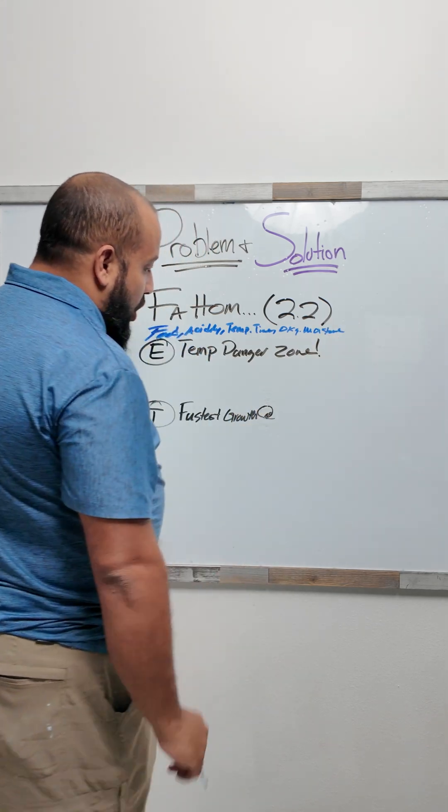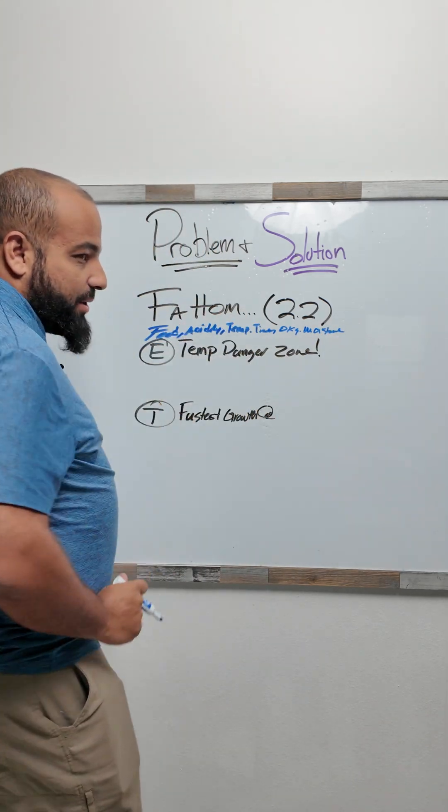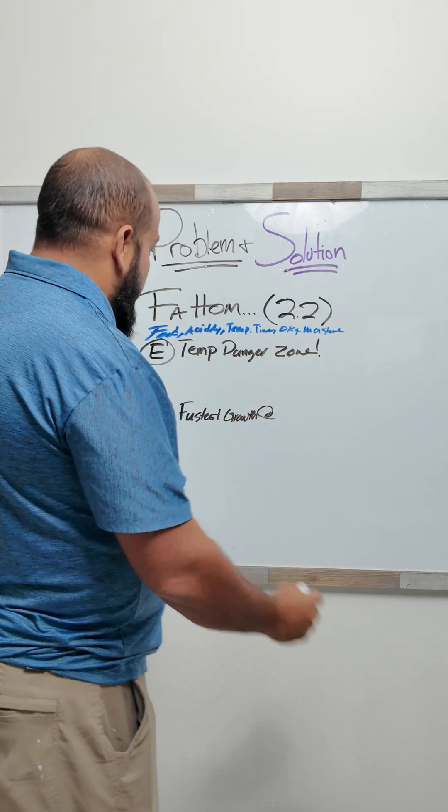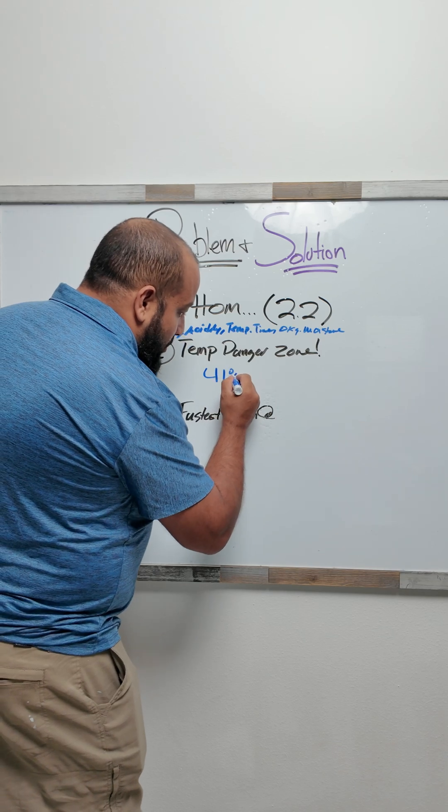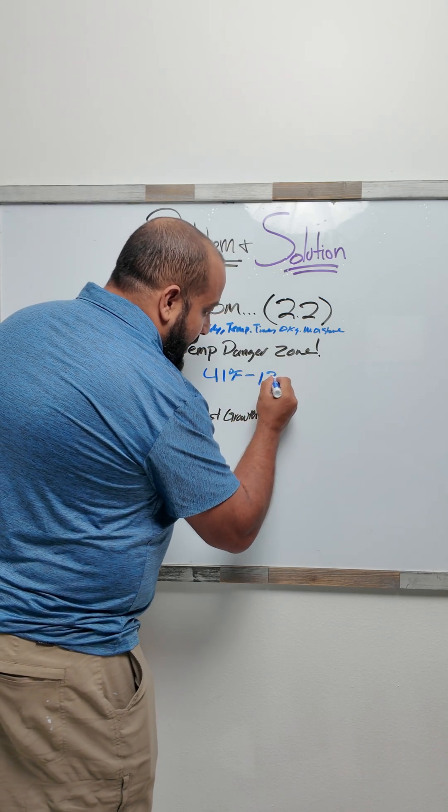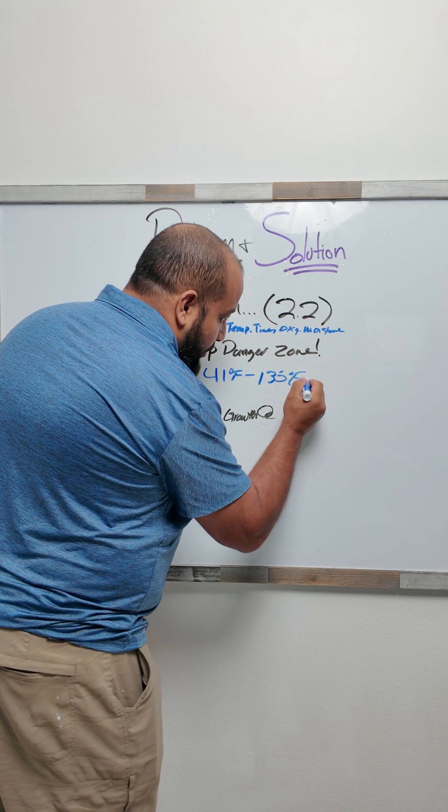Where there's moisture, bacteria likes to harbor. Remember, Fat Tom can be found in 2.2. Temperature danger zone. This is the answer that they're looking for.